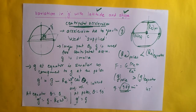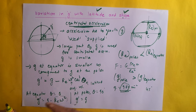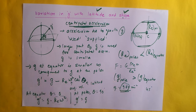We have looked at variation of G with various factors. The videos covered so far include an introduction to the law of gravitation and how the value of G varies with different factors. We will continue our study on gravitation, and in the next video we will start looking at gravitational field of the earth and what is gravitational potential. More about that in the next video. Thank you.